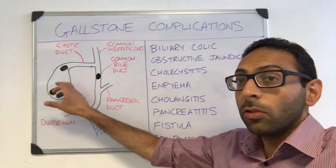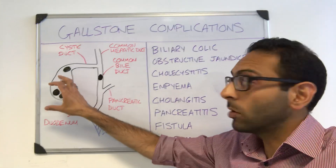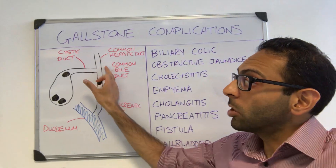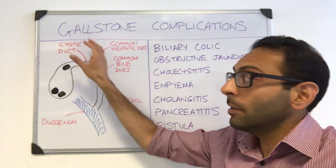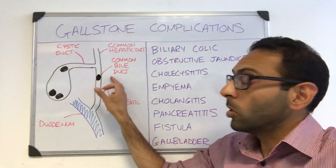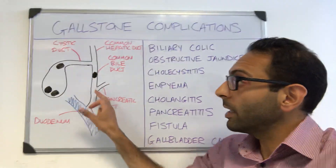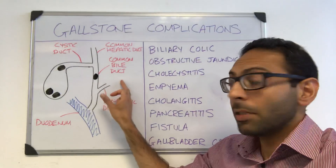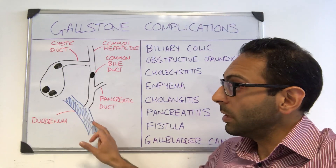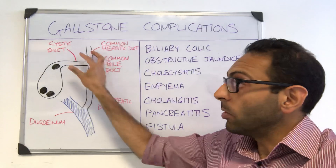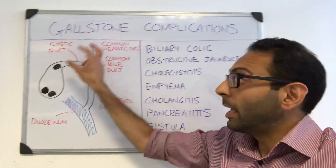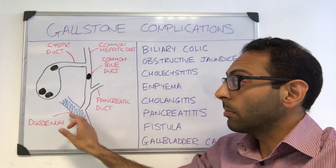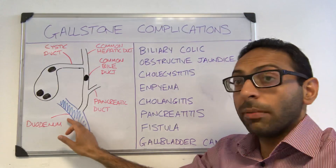So remember you've got your gallbladder here. Gallstones can form in that gallbladder. You have your cystic duct which joins your common hepatic duct — which is going up into the liver — to form your common bile duct. Bile runs down here. You've got your pancreatic duct going into the pancreas, and ultimately everything joins the duodenum. Bile formed in the liver and concentrated in the gallbladder runs down here and should end up in the duodenum.